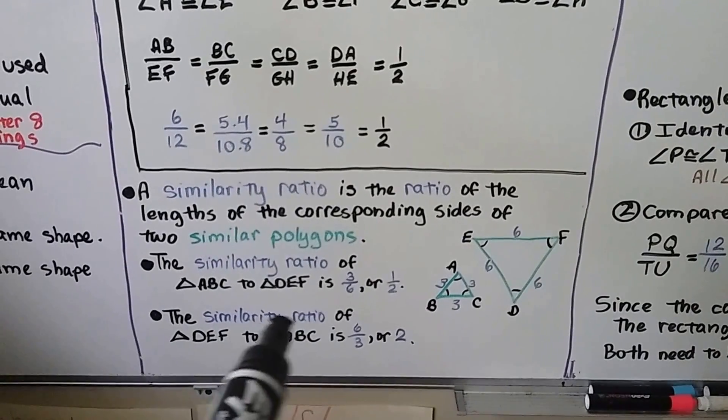The similarity ratio of triangle DEF - see, now that's first - to ABC, we put the DEF value 6 on the top as the numerator, to 3, or 2 when we simplify it. So it's really important the order we put them in. When the similarity ratio is 1 to 1, then the similar polygons are also congruent.